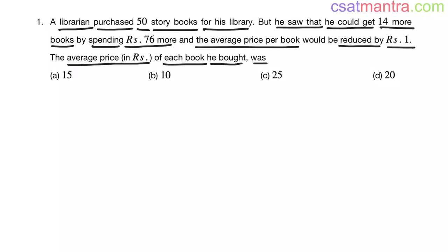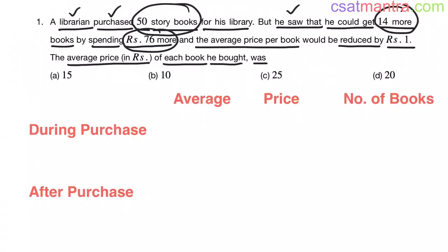Now, in this problem, we have two scenarios, two cases. First one is when librarian purchased 50 story books. Second one is after purchasing, he saw that he could get 14 more books by spending 76 rupees more. So, there are two cases. Now, I have written all the given information in a proper format. This is very important. You need to identify the information given and you need to put them in proper format. So, two cases we have during purchase and after purchase.